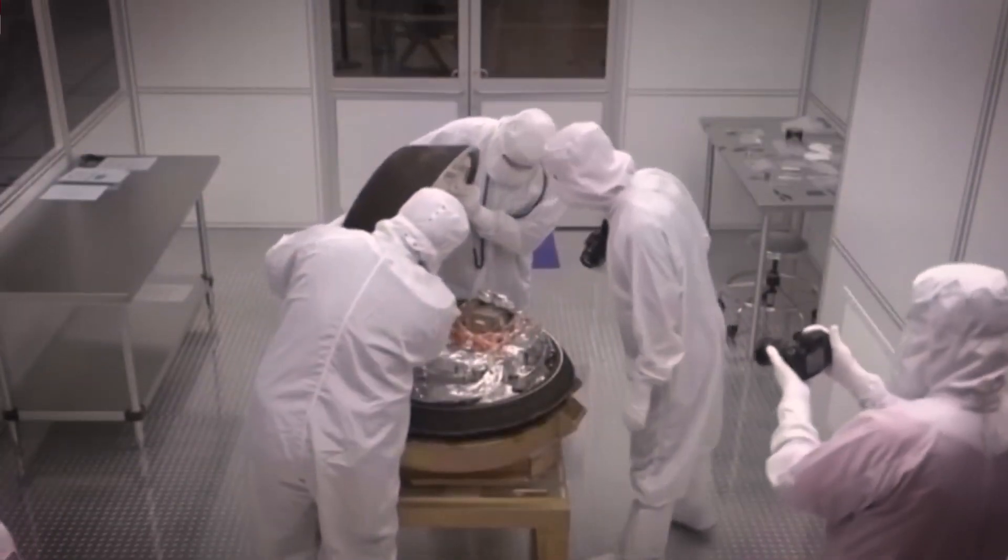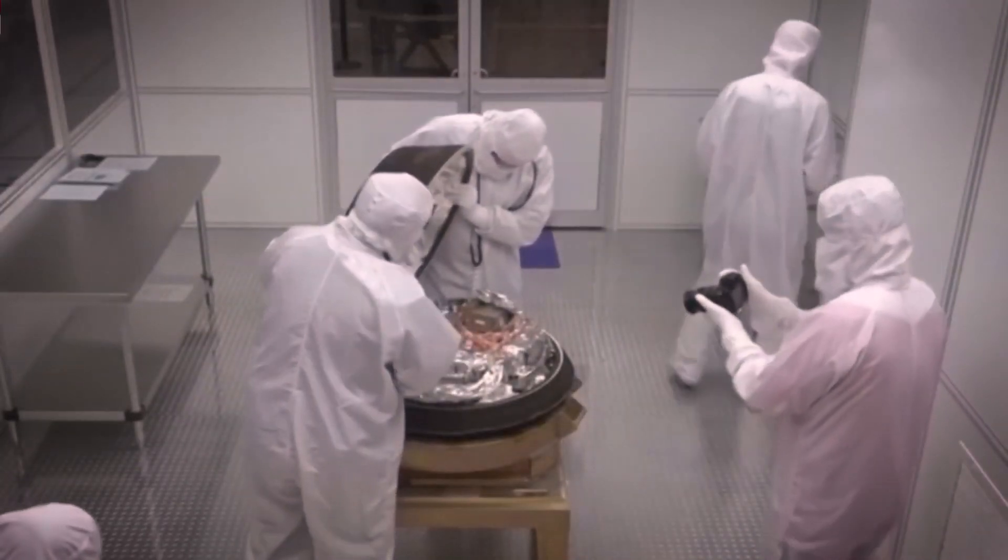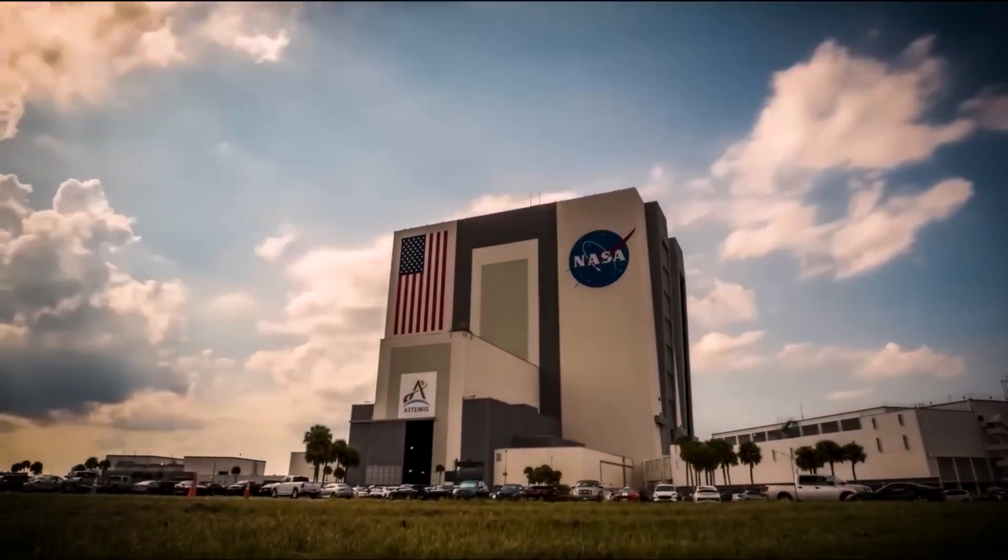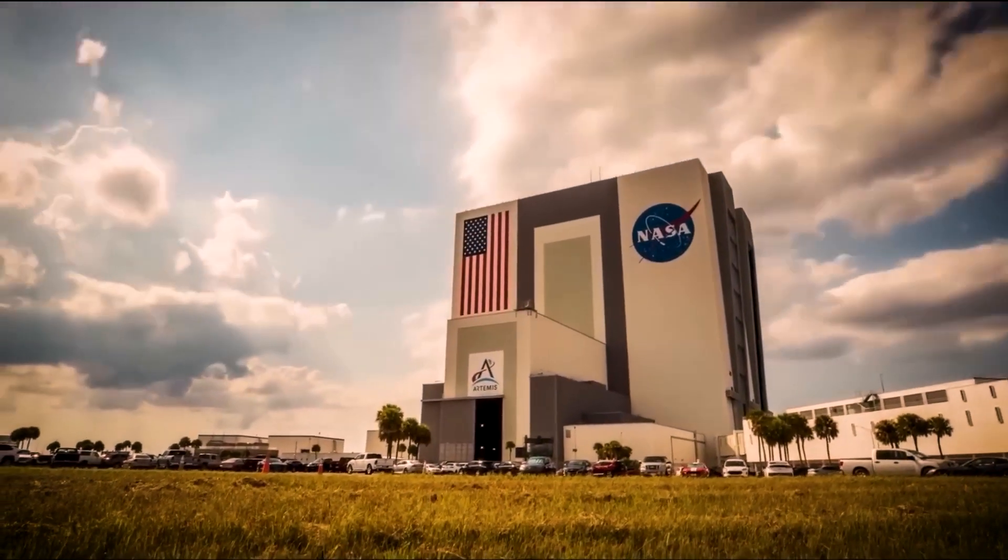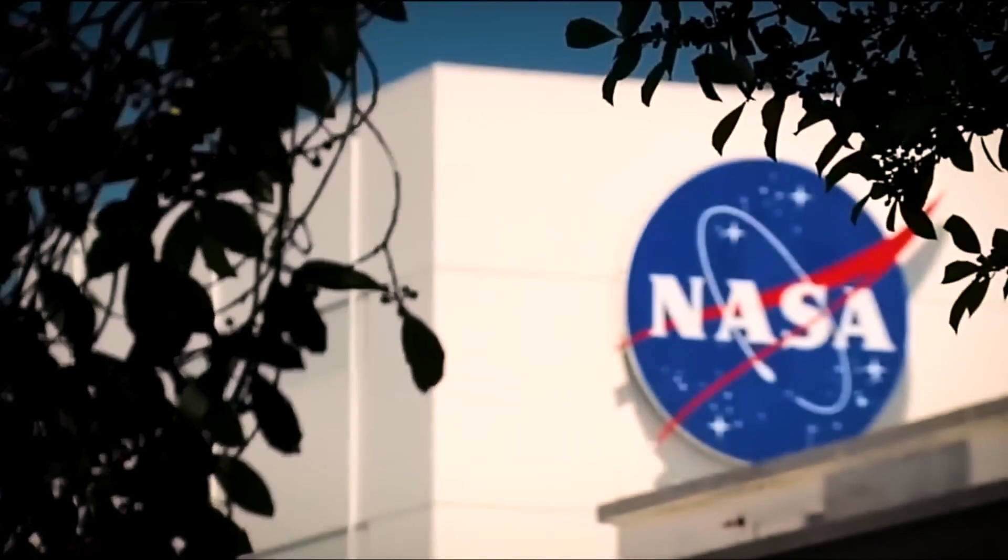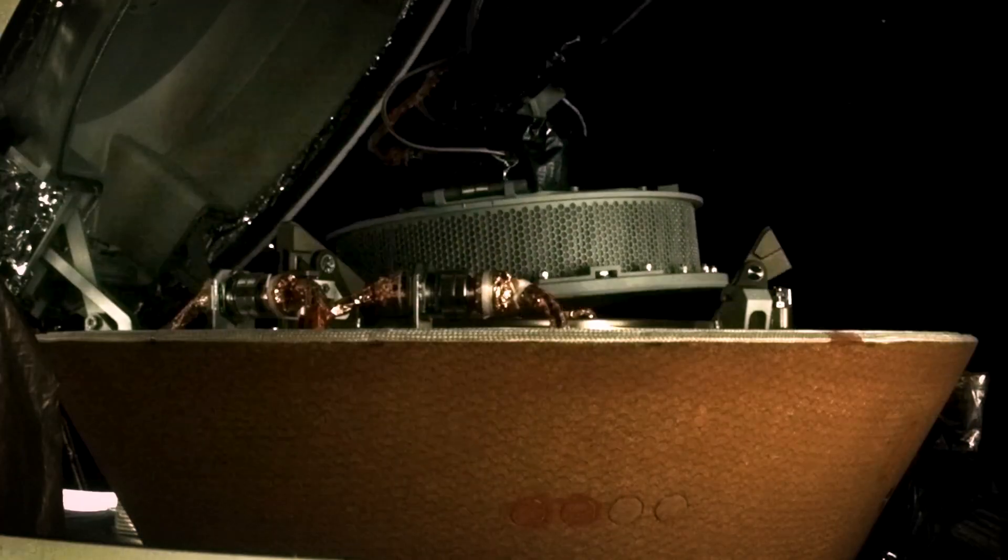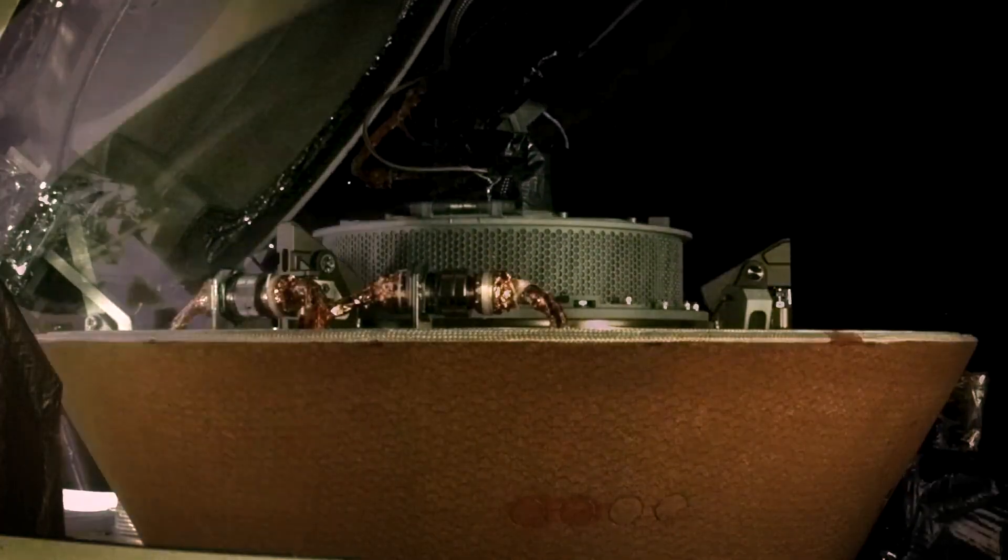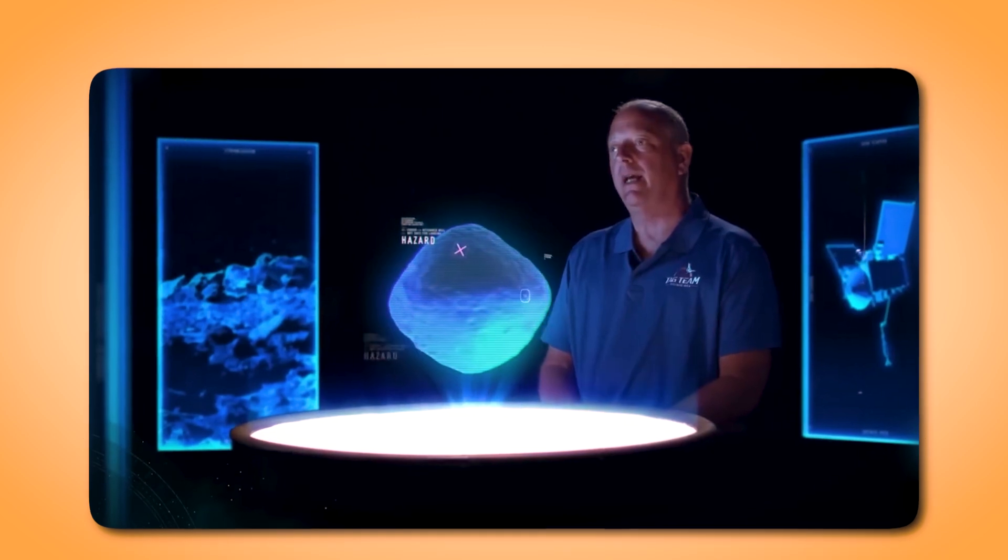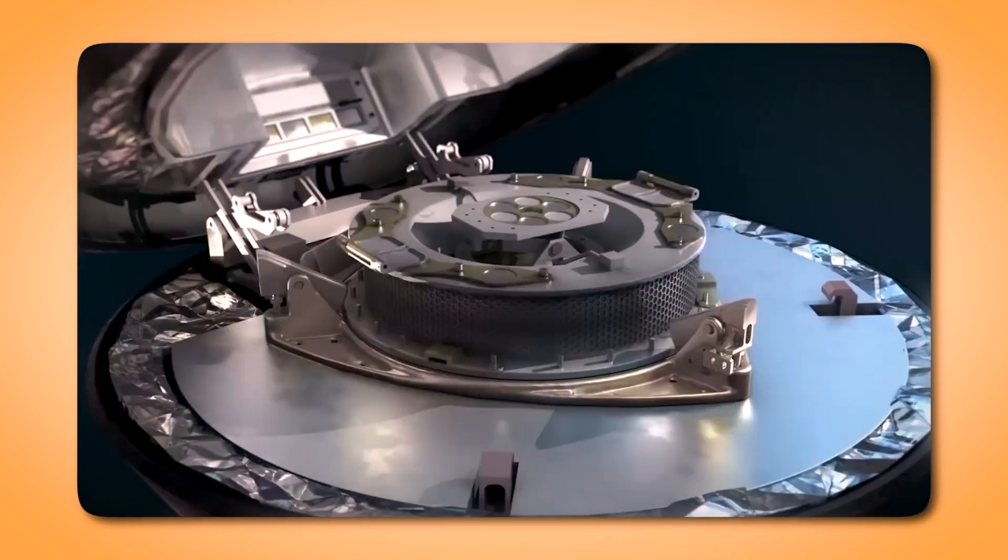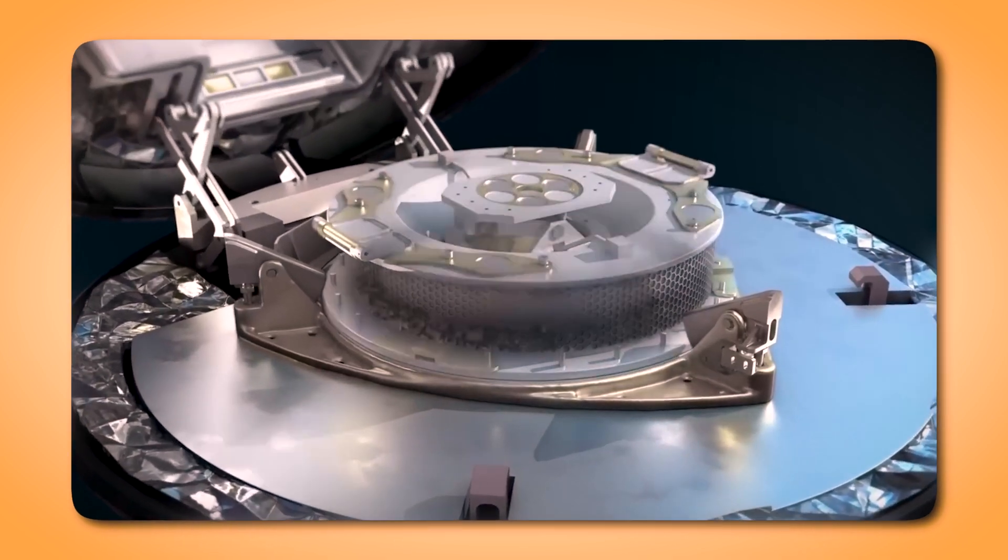The biggest challenge during the disassembly of the touch-and-go sample acquisition mechanism, TAGSAM, canister came from two of its 35 fasteners. These stubborn screws, infiltrated by dust from Bennu, had their threads effectively stripped, rendering them impossible to remove with existing tools. Imagine going through the monumental effort of retrieving this capsule after its arduous journey to Bennu and back, only to find yourself unable to open it. But true to NASA's ingenuity, the engineers quickly rose to the challenge.